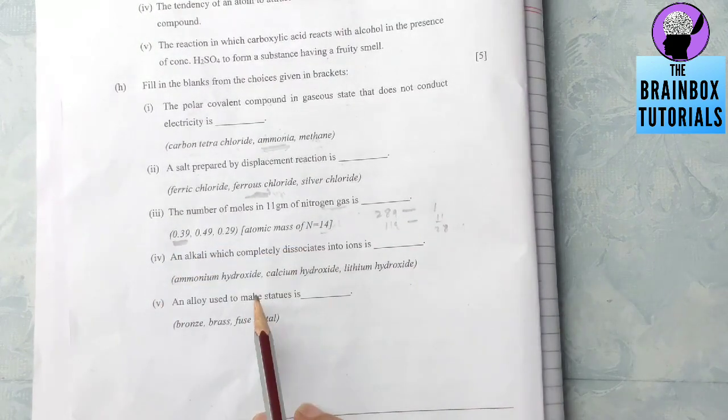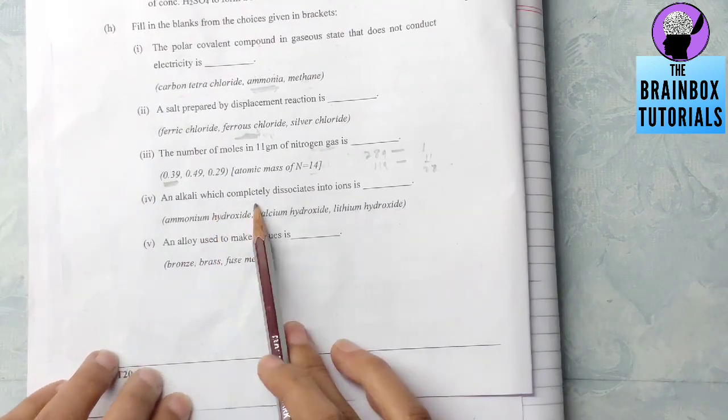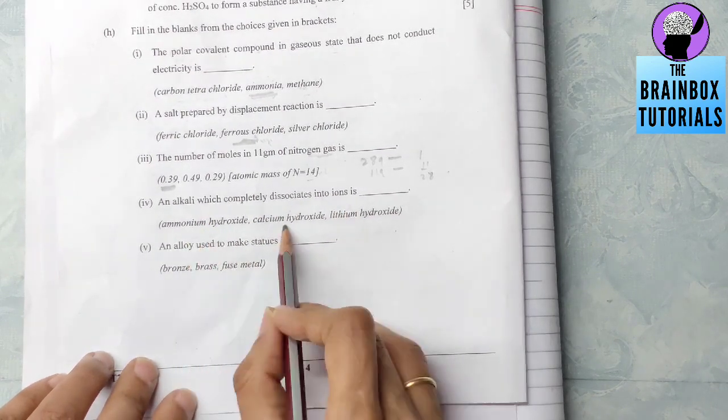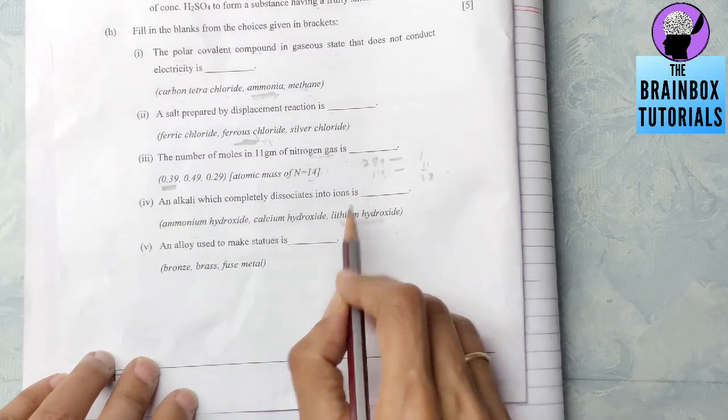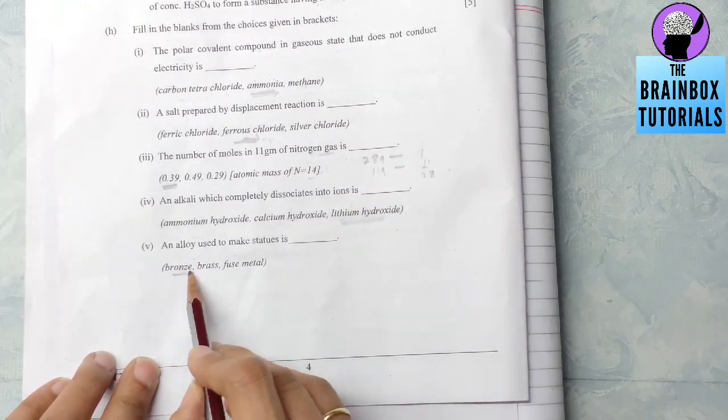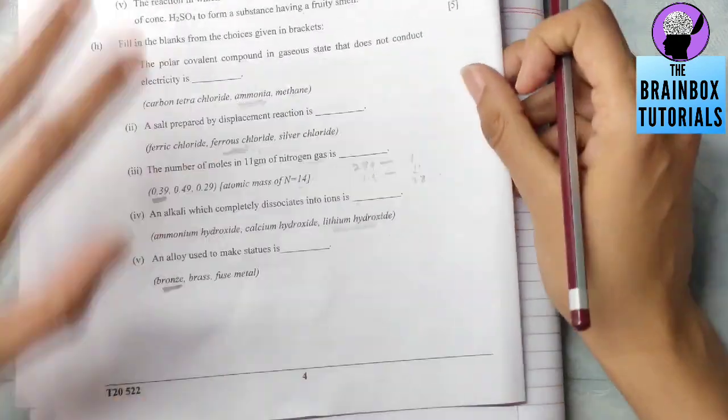Number four: alkali which completely dissociates into ions. The one which completely dissociates is lithium hydroxide - highly reactive. Last one: an alloy used to make statues. This is very easy - bronze is used.